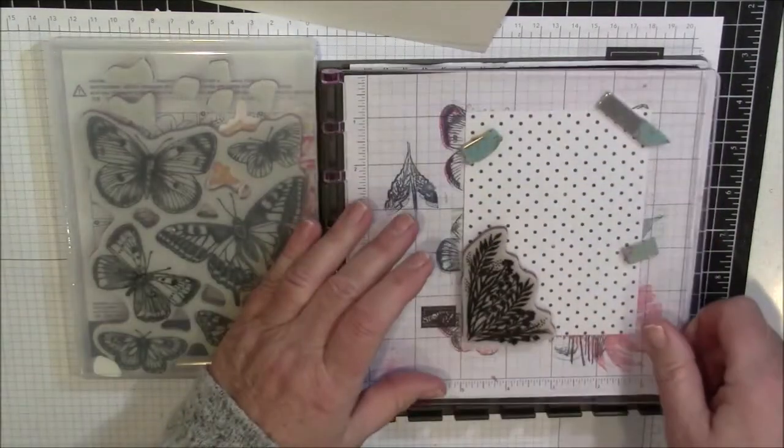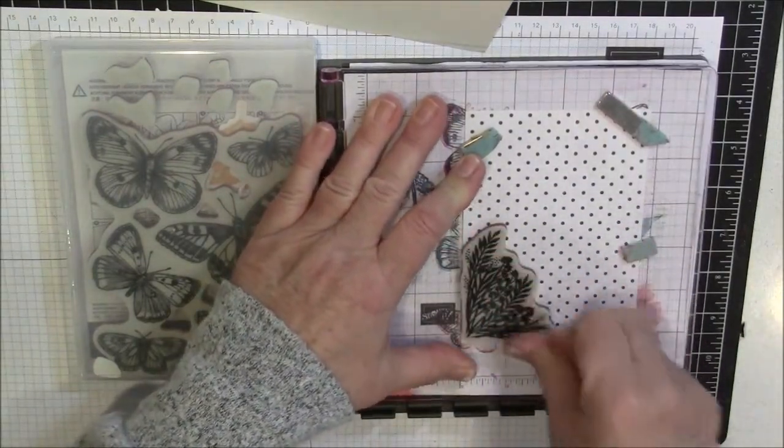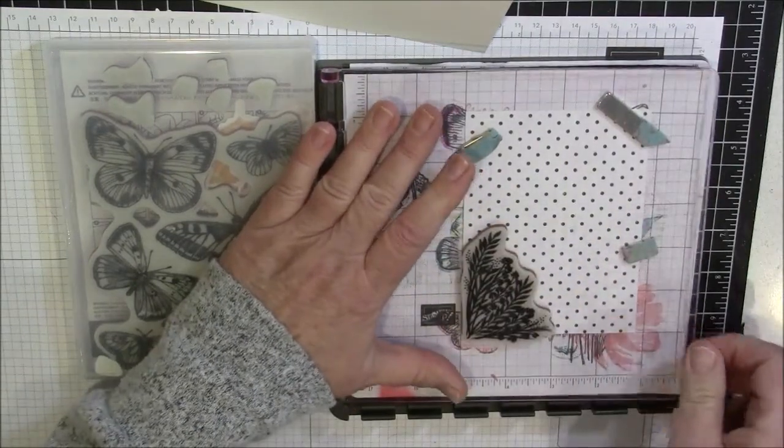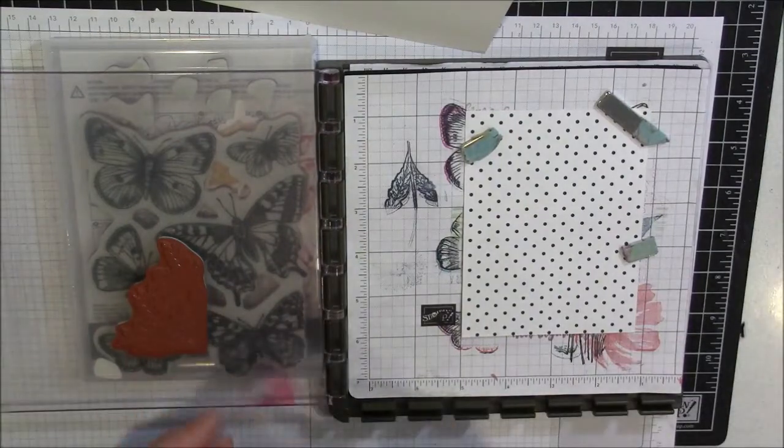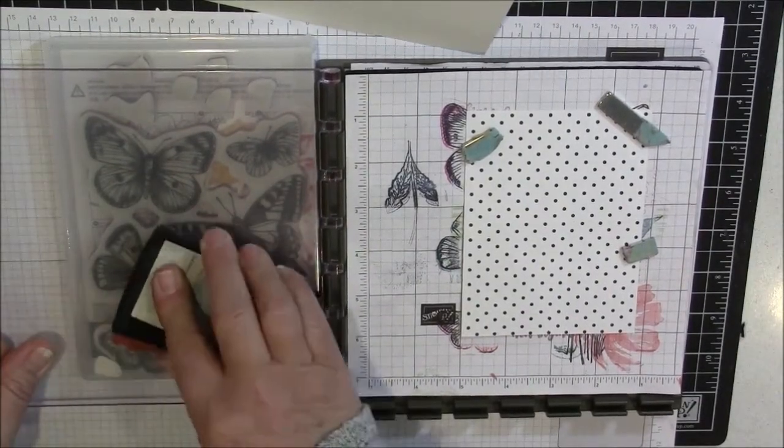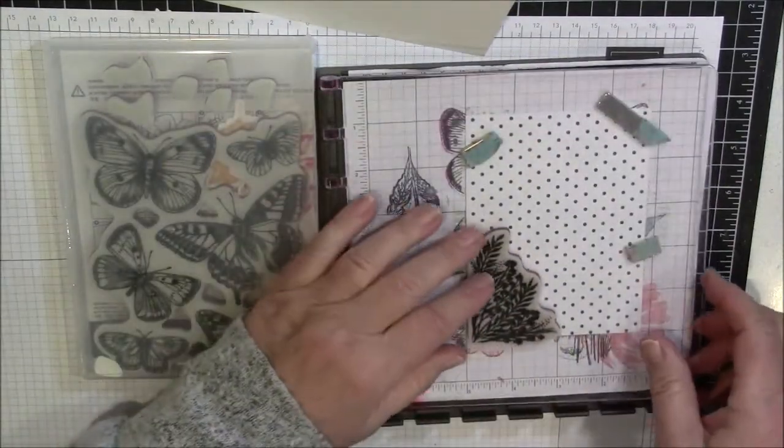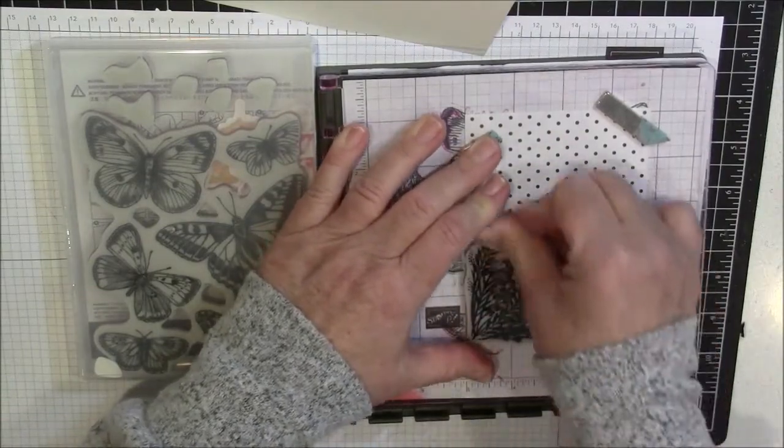This is such a versatile tool that is going to become a staple in your stamping supplies if you don't already have it. So I'm just rubbing it. I am going to lift that up and stamp it one more time. And because my magnets are holding my paper, I can be confident that I'm going to stamp over the same images. Just rub that down.